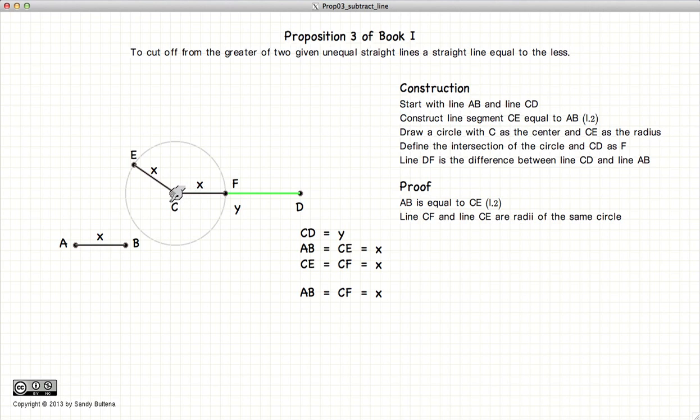And if the original distance CD was Y, we know that DF is equal to Y minus X.